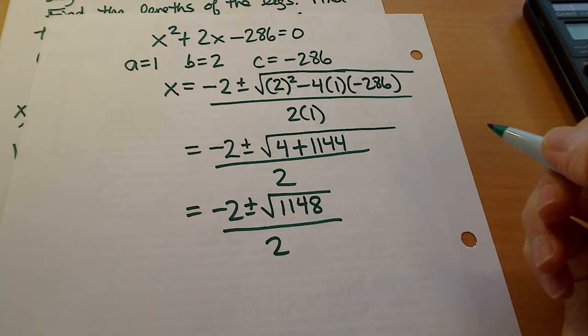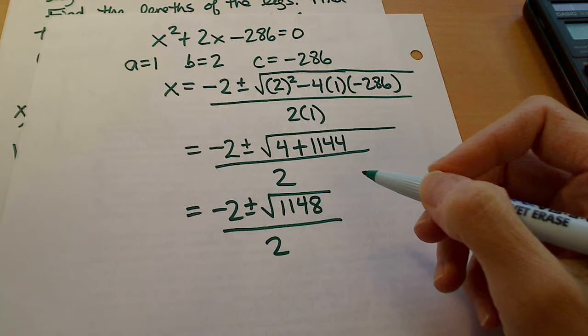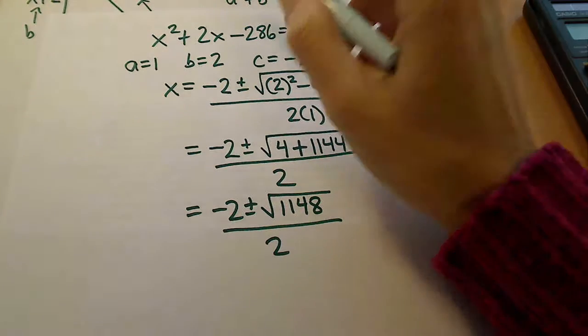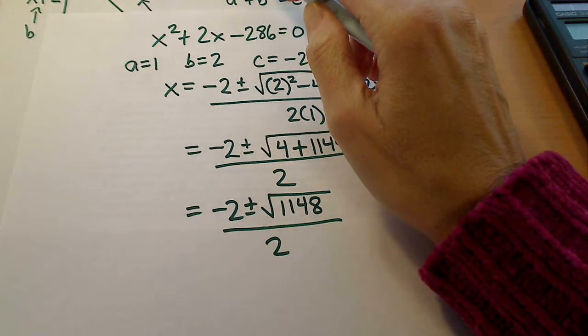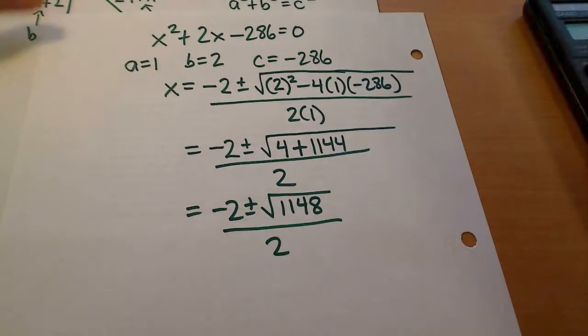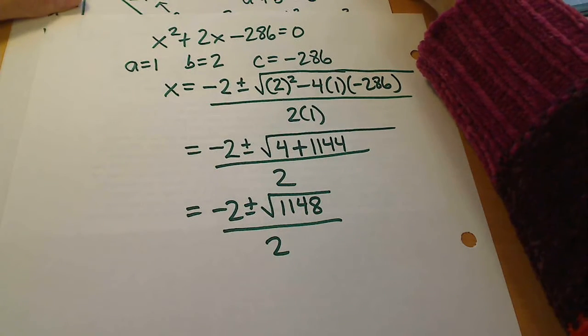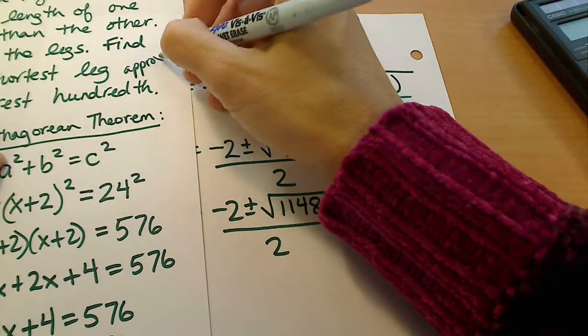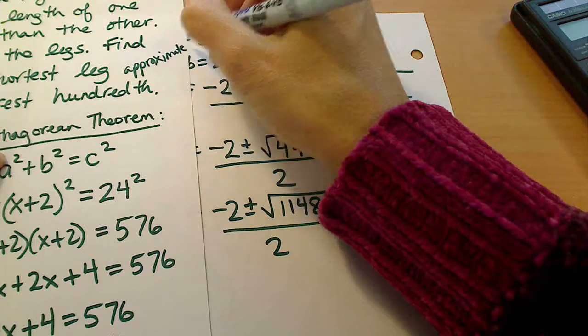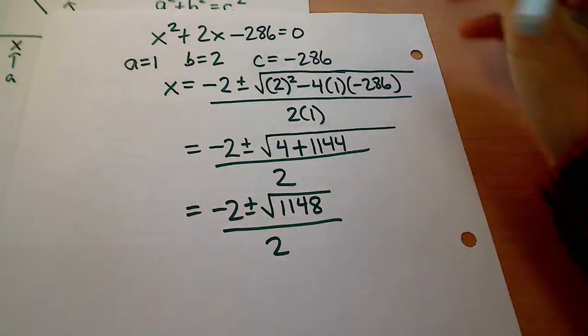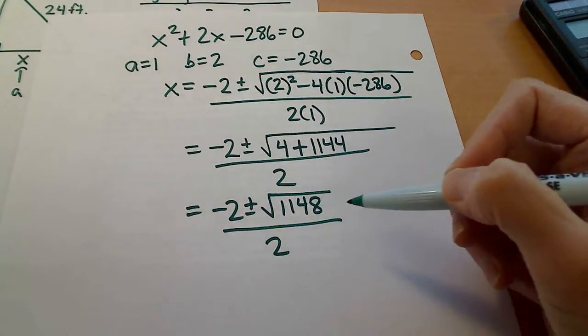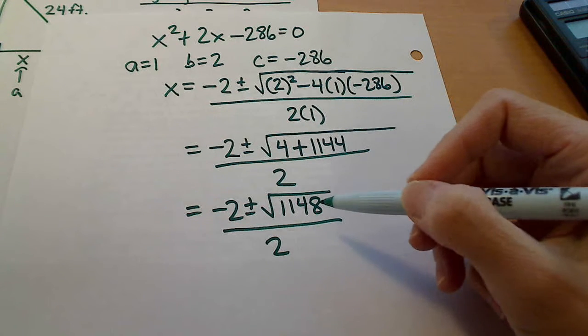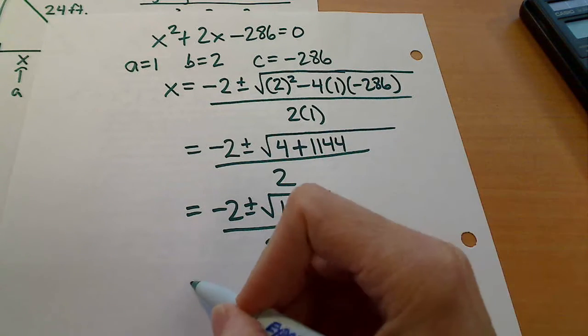In order to figure out how we're going to leave our answer here, we actually need to take a look at how they're asking us to leave it. They said find the length of the shortest leg rounded to the nearest hundredth, and they did use the word approximate. So they want us to approximate the answer here, which means we're not going to leave it in the exact form. The exact form is leaving it in radical form. Instead, we're actually going to do an estimation, which means we need to find the square root for this.